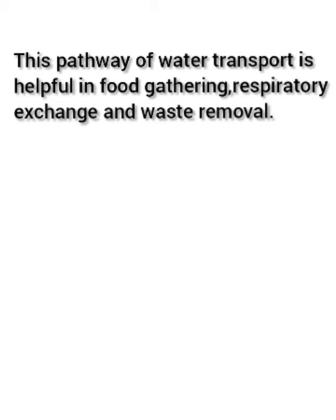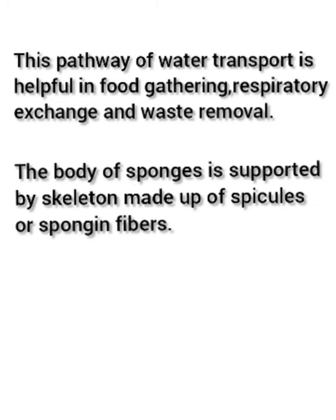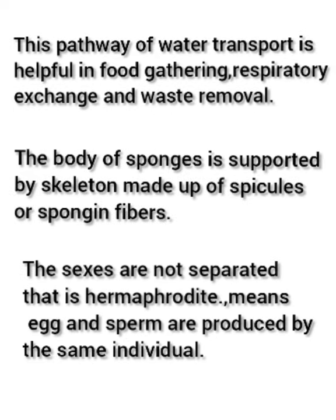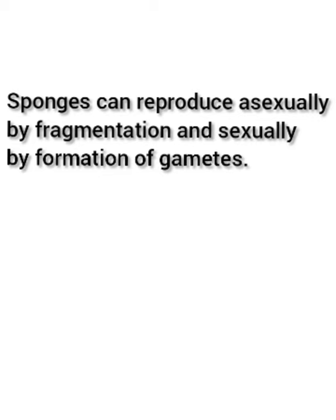The body of sponges is supported by a skeleton made up of spicules or spongin fibers. The sexes are not separated, which is called hermaphrodite — that is, eggs and sperms are produced by the same individual. Sponges can reproduce asexually by fragmentation as well as sexually by formation of gametes.